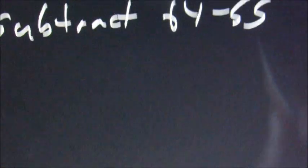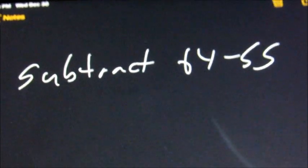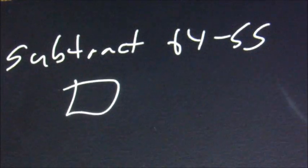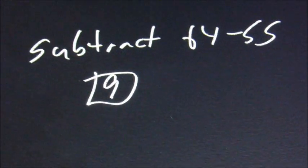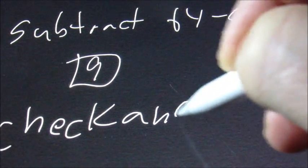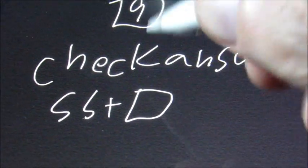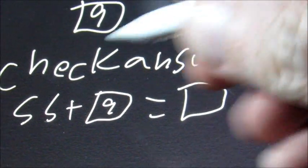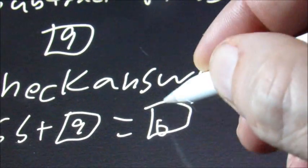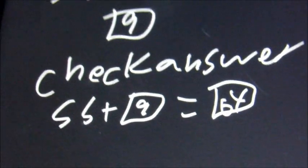Another one like that will be something like subtract 64 minus 55. So when we get that, 64 minus 55 is 9. To check our answer, we have 55 because that's what we subtracted, and it's going to be plus. We got a 9. And that equals 64. 55 plus 9 equals 64. So we know we got that right.